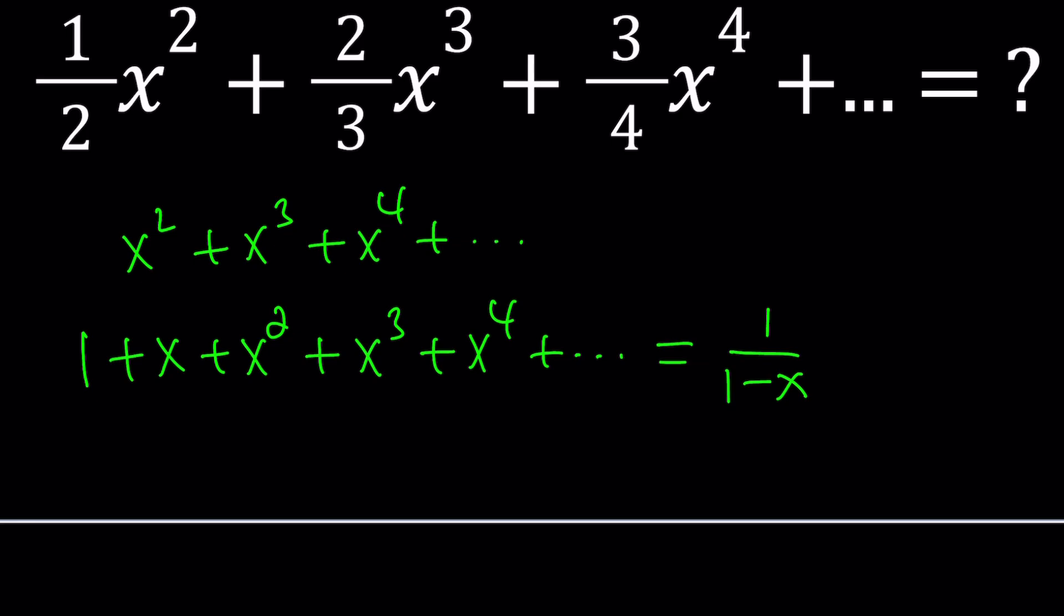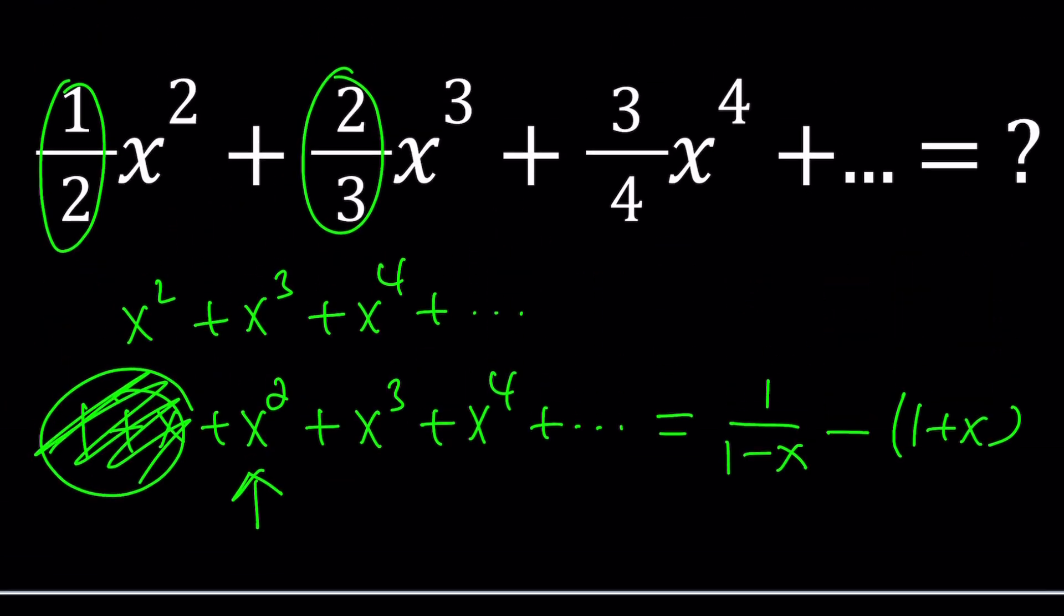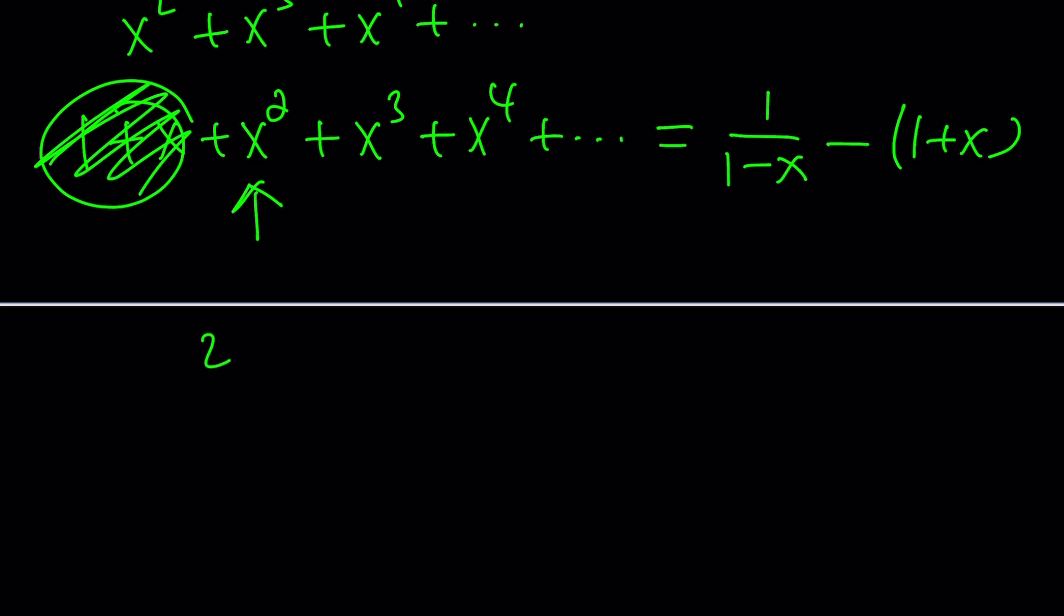Well, we start with this. We don't have 1 plus x, so we might as well just subtract it like this from both sides, and this will be gone, and our sum is going to start with this. But again, it's not good enough because we have coefficients. But if you think about it, the coefficients are actually made up of this because of the difference between the numerator and the denominator. For example, 2 over 3 is 1 minus 1 third. 3 over 4 is 1 minus 1 fourth. Great.